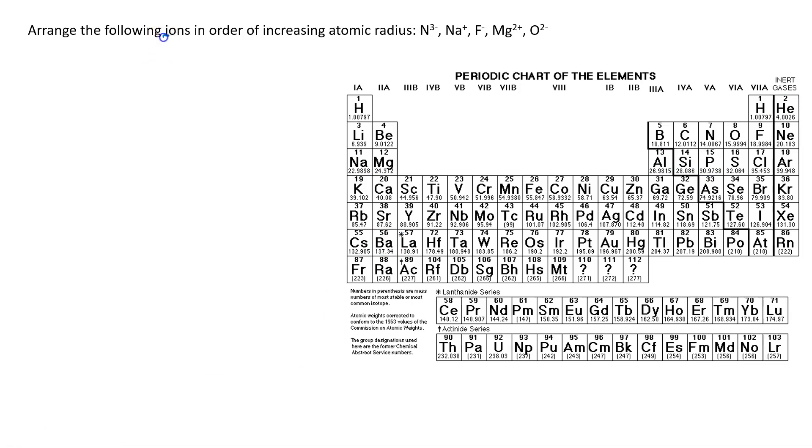So now we have ions, and they want them in order of increasing atomic radius. We have nitride, the sodium ion, and I'm thinking these are all going to be isoelectronic. Nitride would have 10 electrons, a sodium ion would have 10 electrons, fluoride would also have 10, magnesium ion would also have 10, and the oxide ion would also have 10 electrons. These are isoelectronic. They have the same number of electrons.